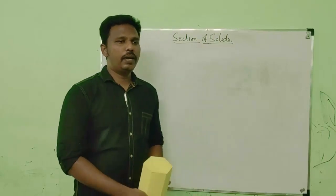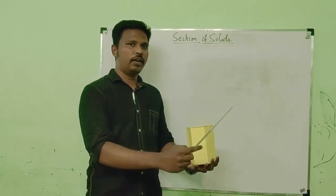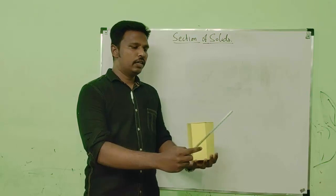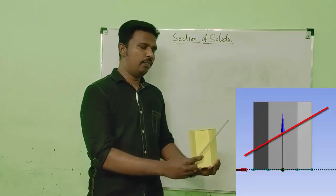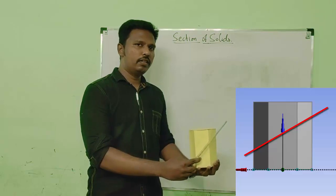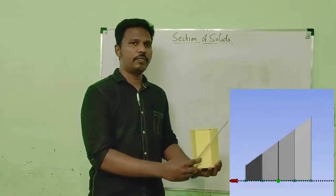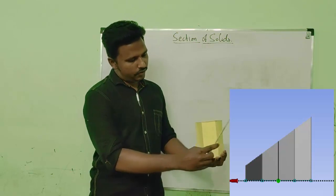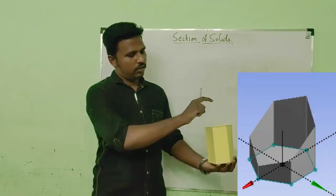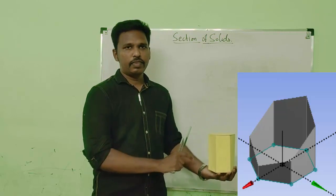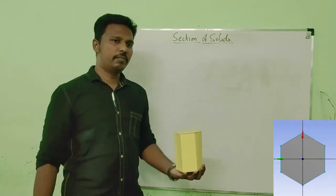If the cutting plane is inclined to HP and perpendicular to VP, in this orientation I can see the section view in the top view. However, the section view visible in the top view is not the true shape, because if I cut the solid at this inclination the true shape will actually be a larger shape.